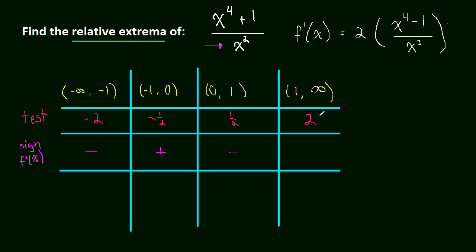And then 2, we're going to get 16 minus 1, 15 times 2 is 30 over 2 cubed, which is 8. So 30 over 8, they're all positive values, this is positive.